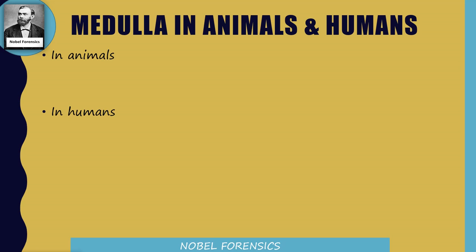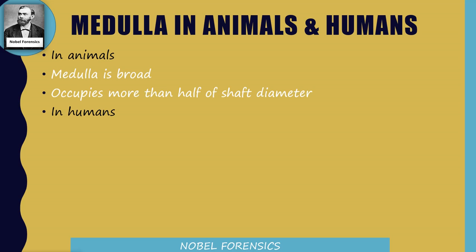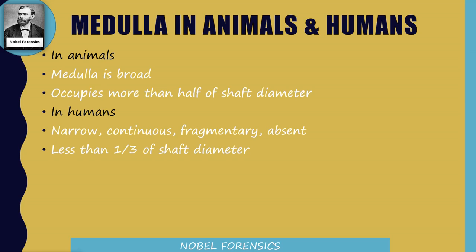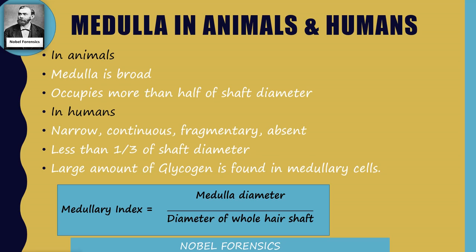Difference in medulla between animals and humans: in animals the medulla is usually broad, occupying more than half of the shaft diameter. In humans, it is sometimes narrow, continuous, fragmentary, or even absent, and is usually less than one-third of the shaft diameter. A large amount of glycogen is found in medullary cells. The medullary index is medulla diameter divided by the diameter of the whole hair shaft. In animals, the medullary index is more than 0.5, and in humans it is less than 0.3. With this medullary index we can identify whether hair is human or animal.